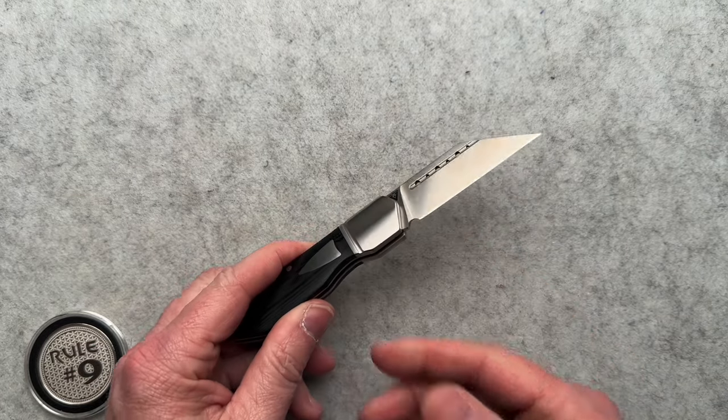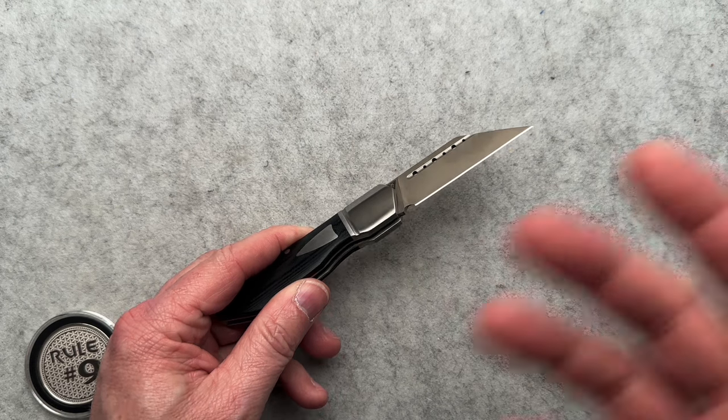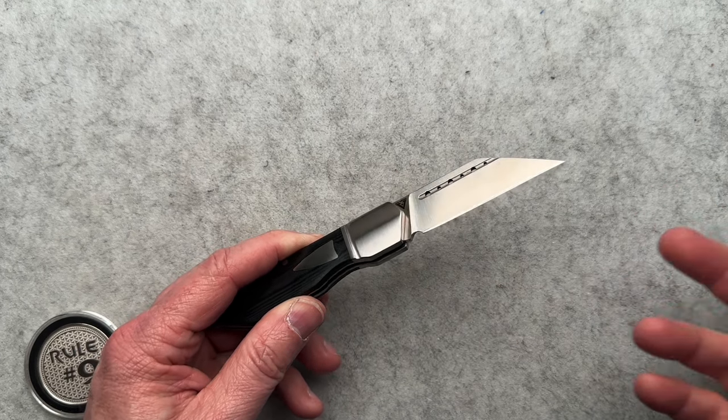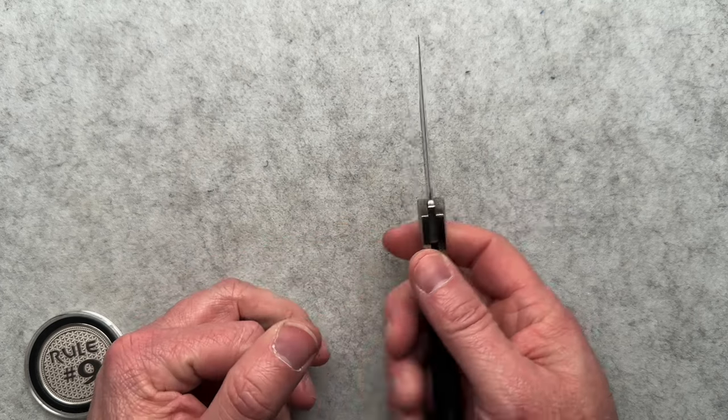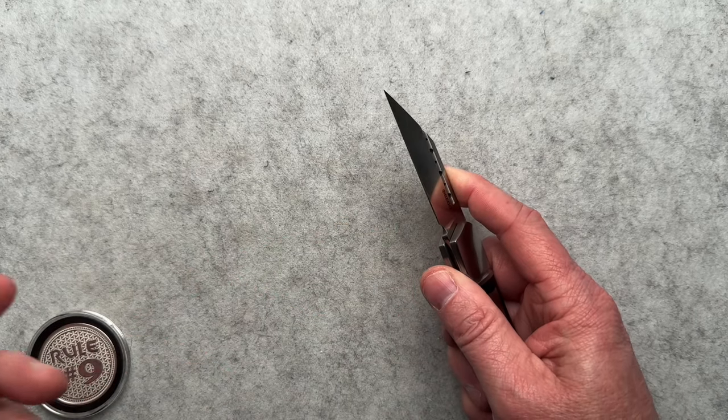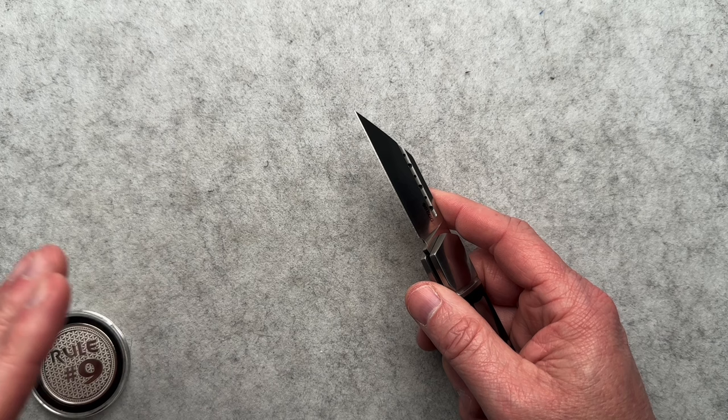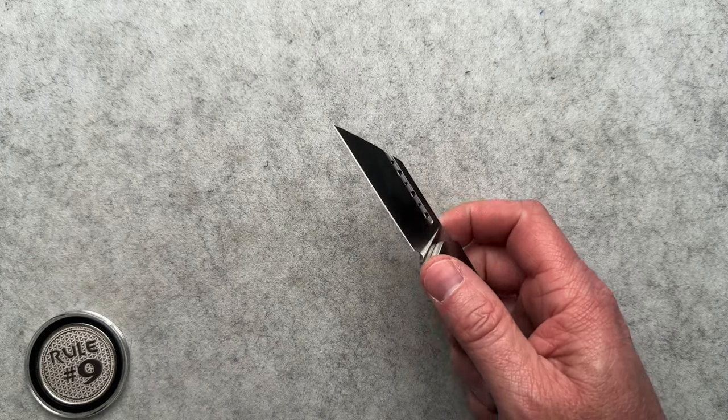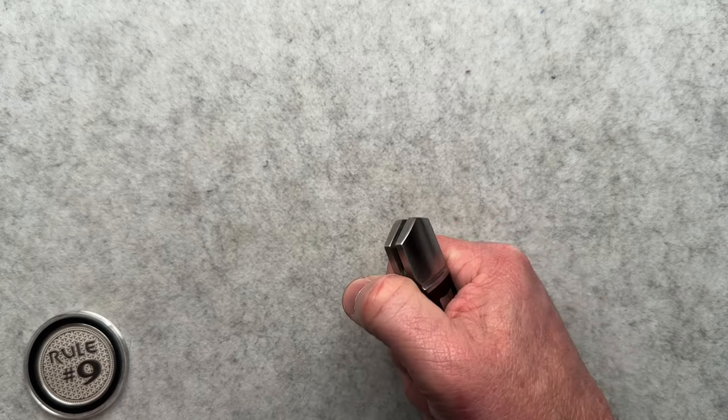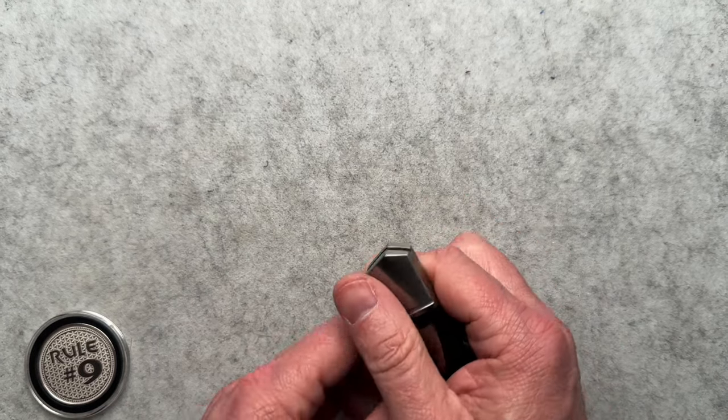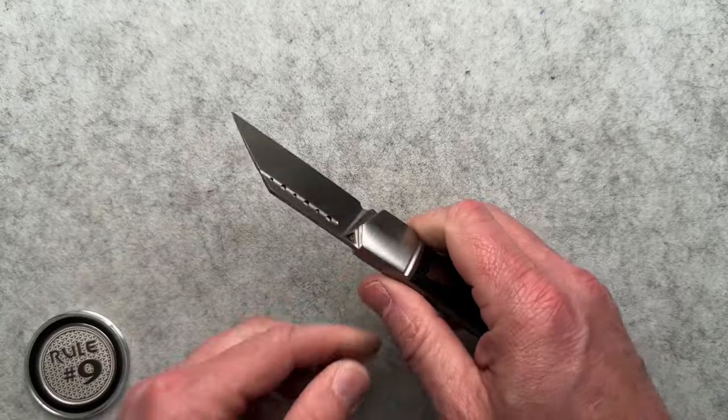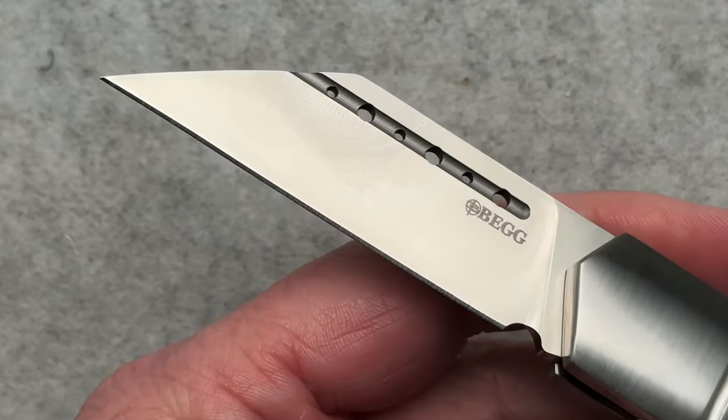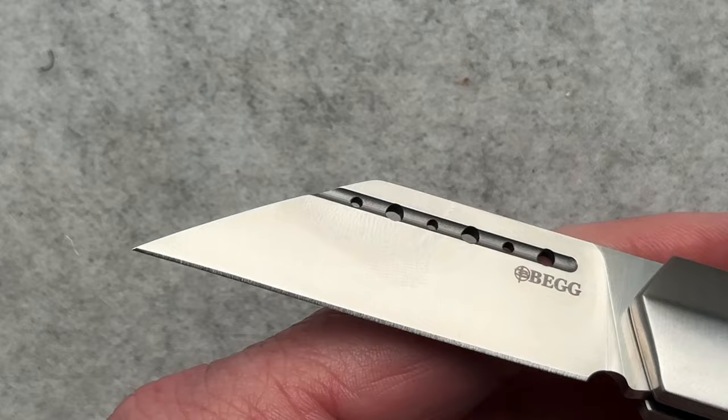They're kind of doing a mix between 14C and D2. Some of their bigger ones are Aus10. But they are using budget line steels, not crap steels, like not a budget line like it's junk, but they're using affordable, nice, decent steels in making these so that they can keep the prices down. This one weighs in at 3.7 ounces.